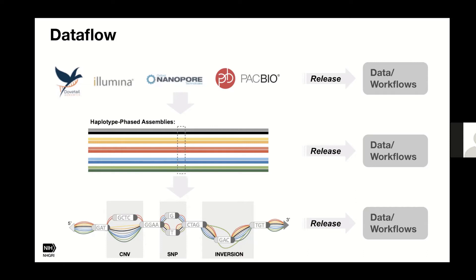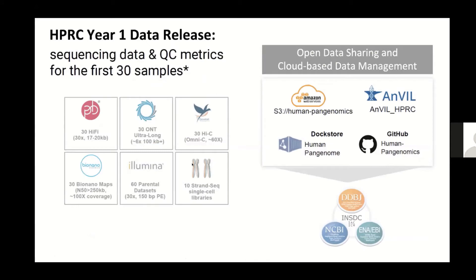Our third product is the pan-genome graph resource itself. We're developing workflows, describing the methodology to make these graphs, and releasing them to the public. Our year one release focuses on the first 30 samples from our production efforts, with PacBio HiFi at least 30x coverage and a median consensus read length of 17 to 20 kilobases. All data is made open and available after QC, housed on AWS and Anvil. Workflows are issued through Dockstore and GitHub, and data is made accessible through public databases worldwide.